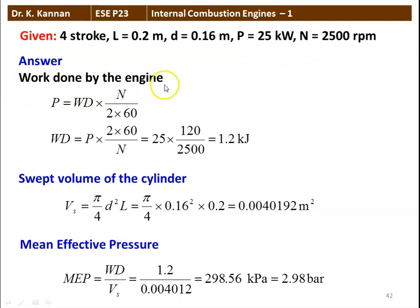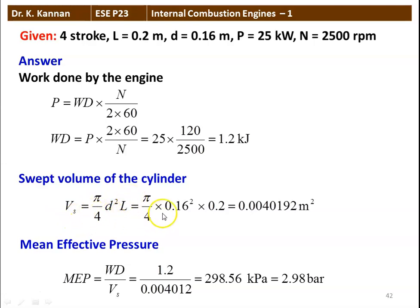Work done by the engine from the definition of power: power equal to work done into N divided by 2 into 60. Rearranging, work done equal to power into 2 into 60 divided by N, so 25 into 120 divided by 2500 equal to 1.2 kilojoules. The swept volume Vs equal to pi by 4 d square into L, which is pi by 4 into 0.16 square into 0.2 equal to 0.0040192 meter cube. Mean effective pressure defined as work done divided by swept volume: 1.2 divided by 0.004012 equal to 298.56 kilopascal, which is 2.98 bar.